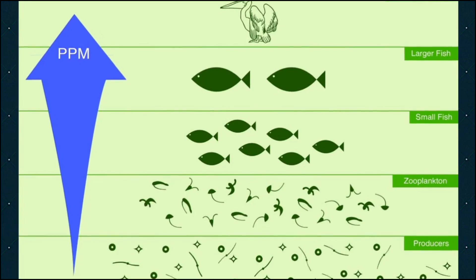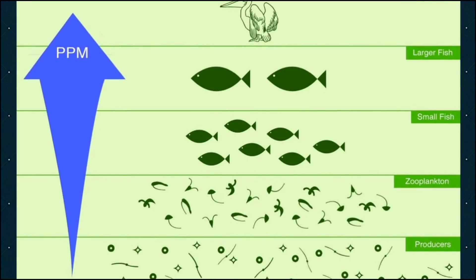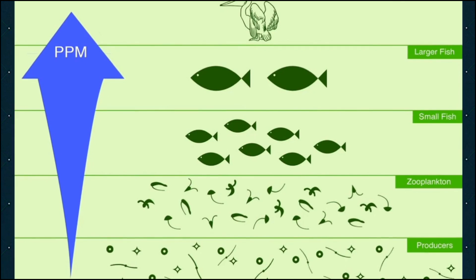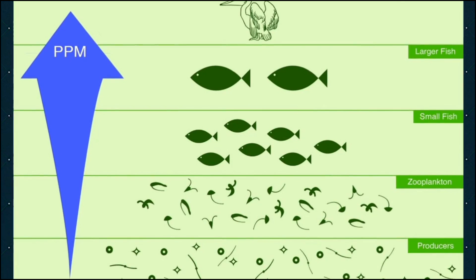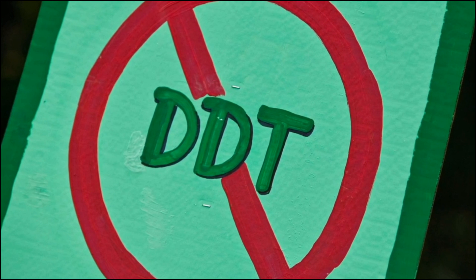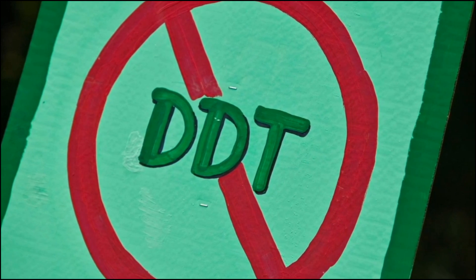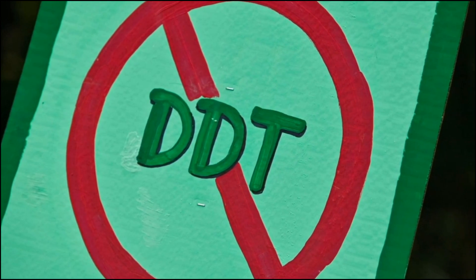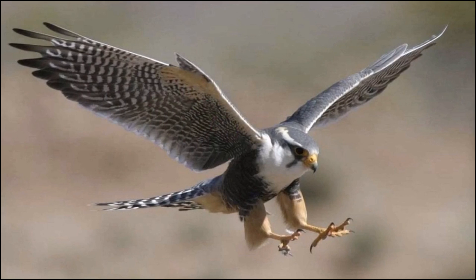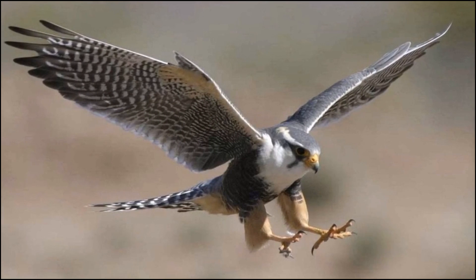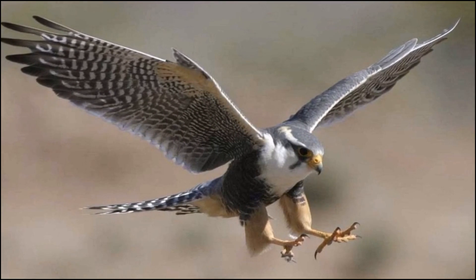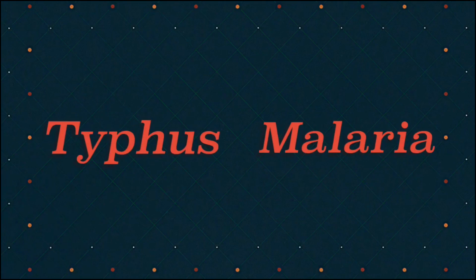This can cause the concentration of the chemical to increase by millions of times by the time it reaches the top of the food chain. Because of all these problems, DDT was banned in 1972 in the United States and in the mid-80s in Canada. This ban of DDT was beneficial to the birds of prey and their populations went up.